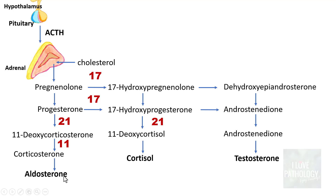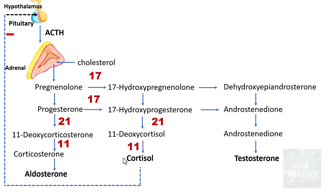So the adrenal cortex is responsible for producing three important hormones: aldosterone from zona glomerulosa, cortisol from zona fasciculata, and testosterone from zona reticularis. Once adequate cortisol is present, it provides negative feedback to the hypothalamus and pituitary to reduce ACTH secretion.